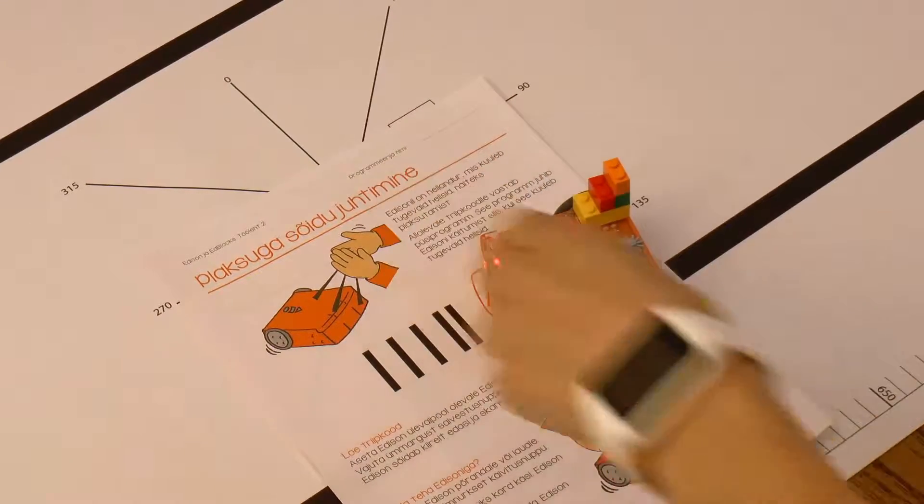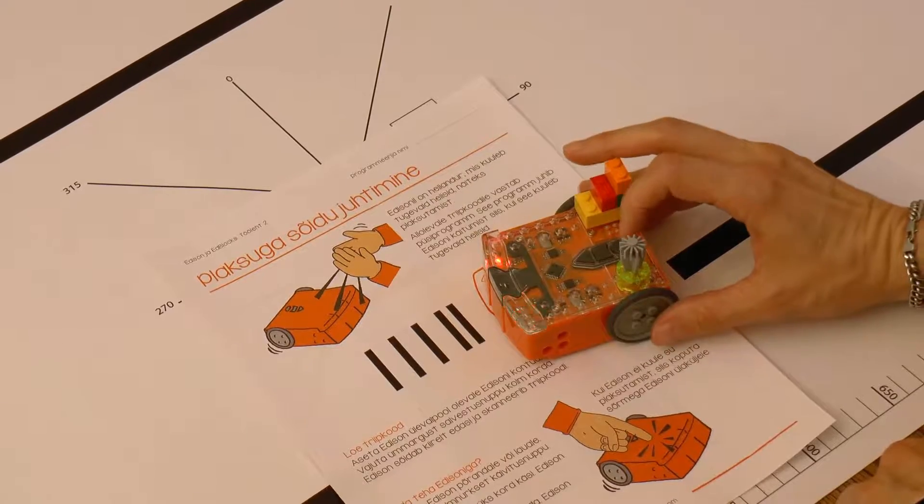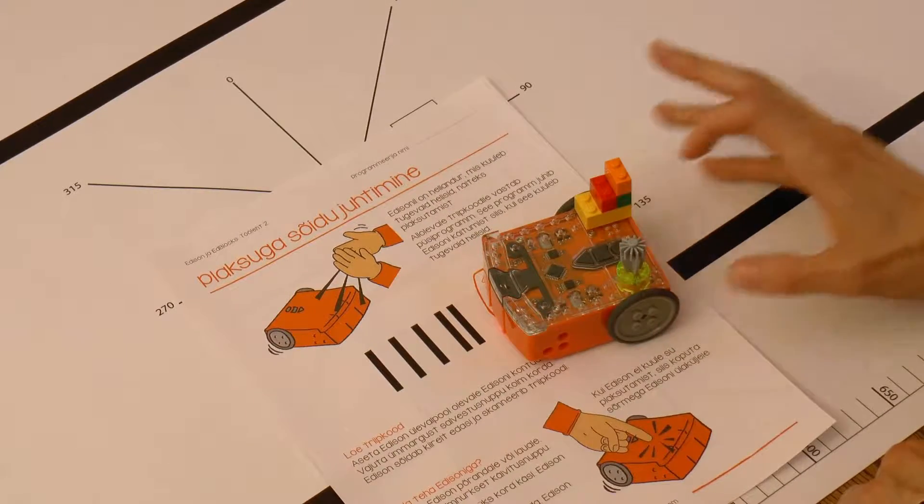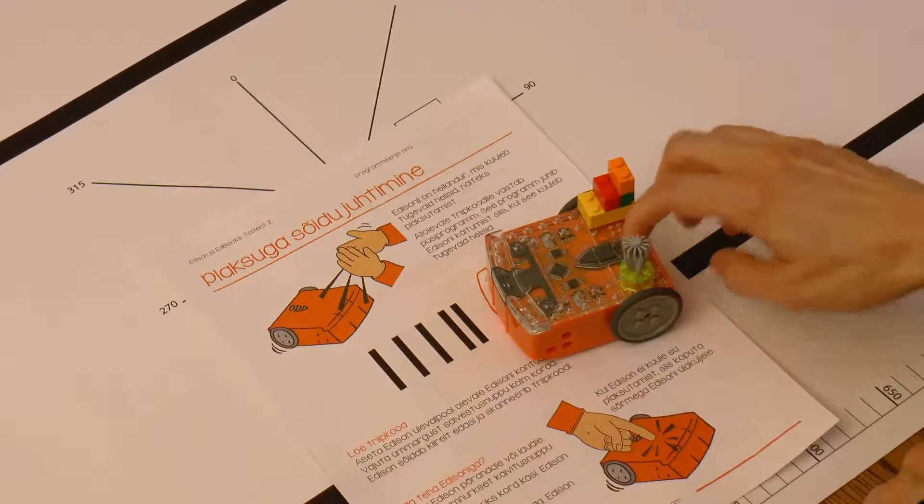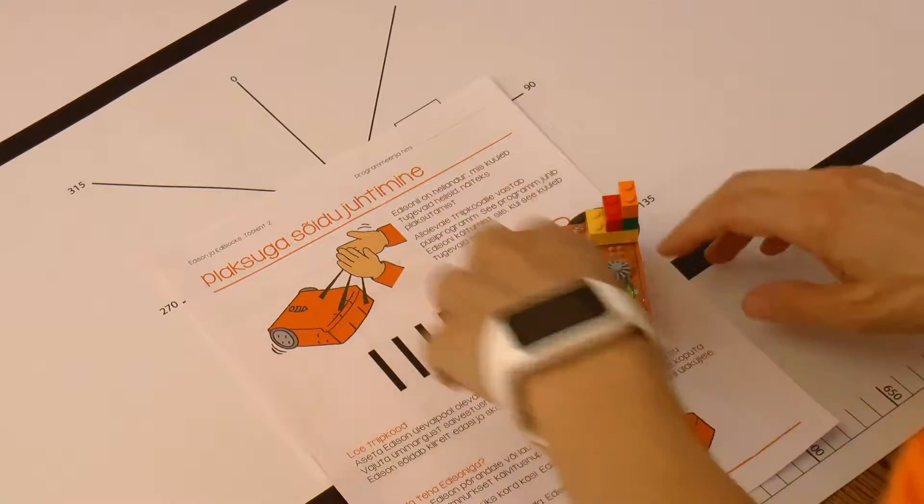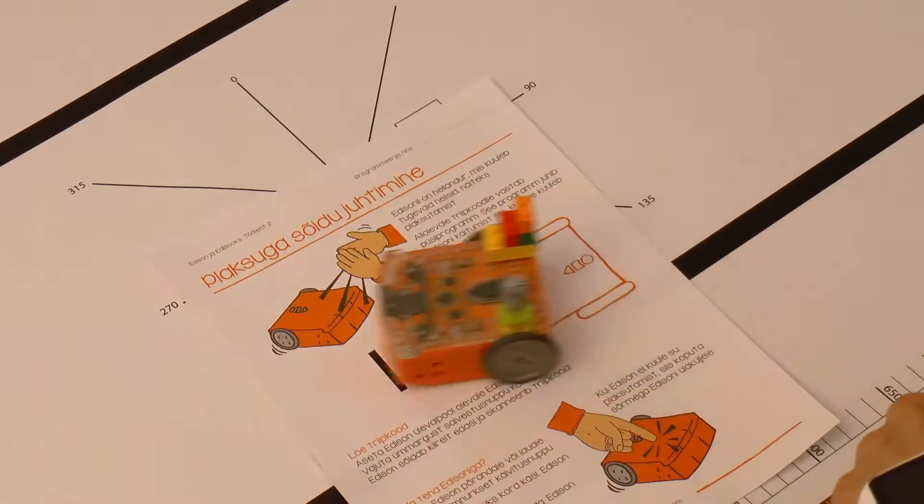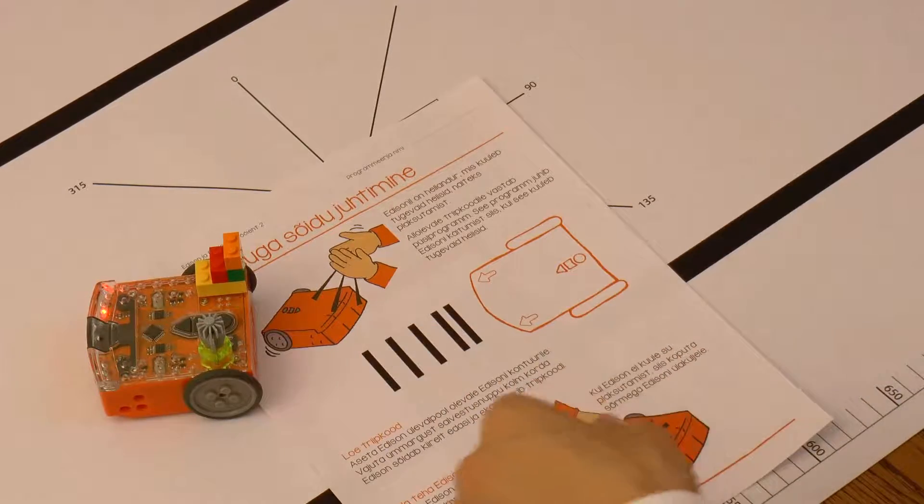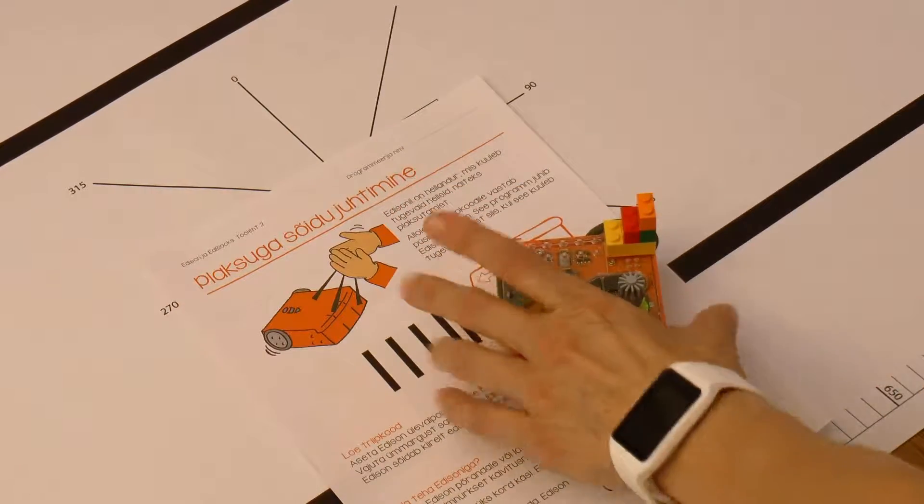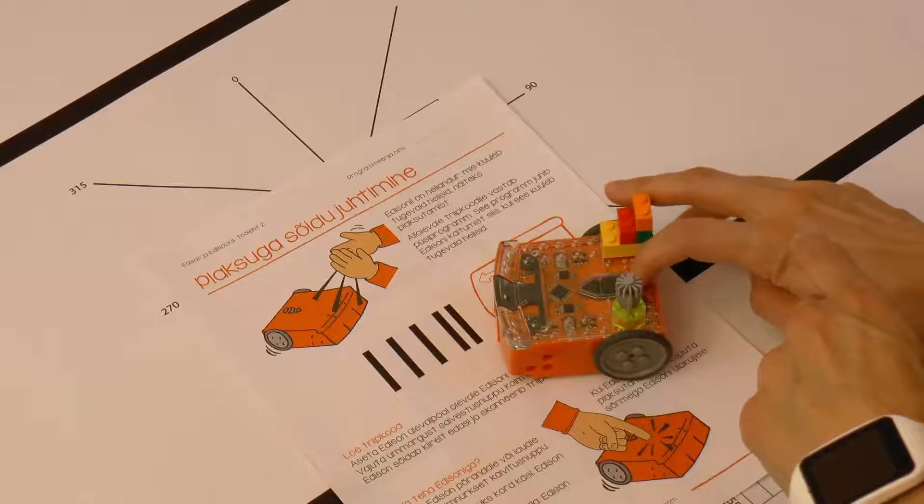Sometimes, if the robot isn't positioned precisely or the lighting conditions are bad, for example it's too light or too dark in the room, then Edison will drive over the barcode but fail to recognize it and do a completely different sound. In this case, try again.